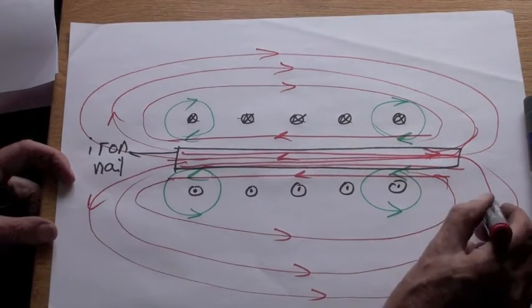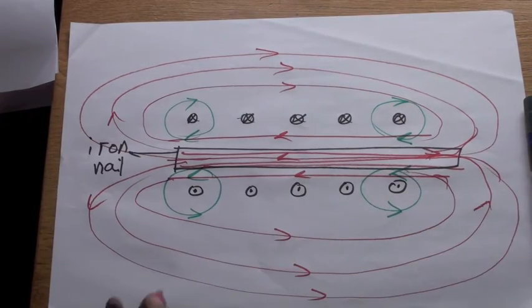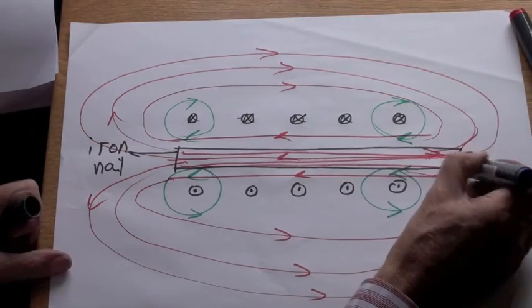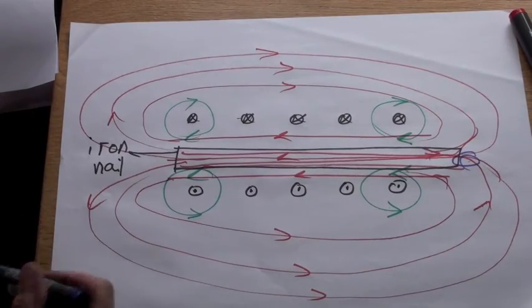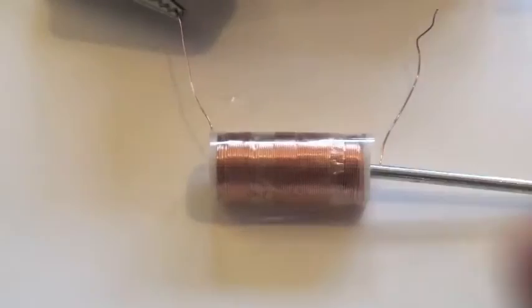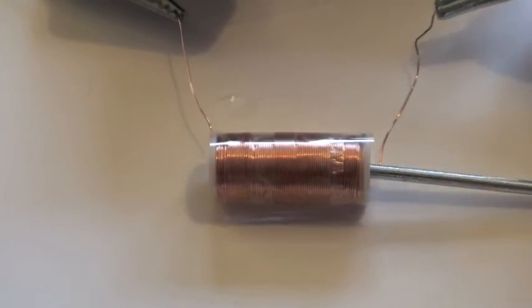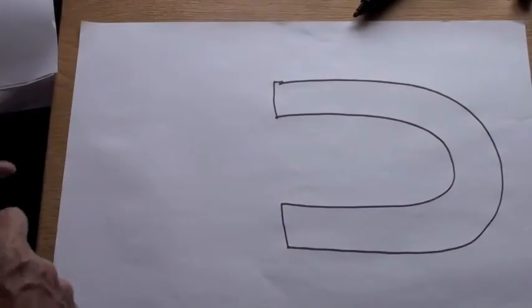Although it is rather untidily and badly drawn here because I've allowed two lines to cross, that also explains why the nail was pulled into the coil. The increased permeability of the nail reduces the total energy of the magnetic field when it moves in.